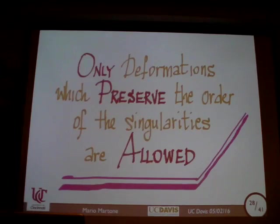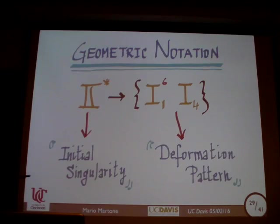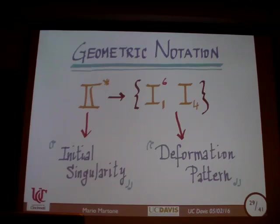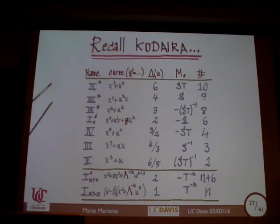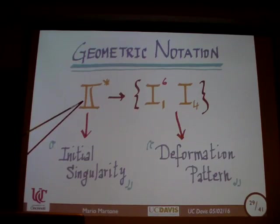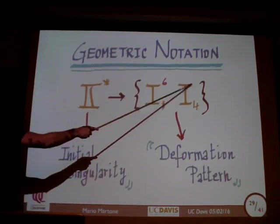This is how I'll indicate a conformal field theory in our geometric language: the initial singularity, followed by the deformation pattern — the type of singularities you get after the split. For example: II* has order 10, I_N has order N. So II* splitting into six I_1s plus one I_4 gives order 6 + 4 = 10 — this is an allowed split. With just this one rule, you get a very large number — you'd claim there are 389 inequivalent N=2 SCFTs for rank one. That sounds a little unclassifiable.